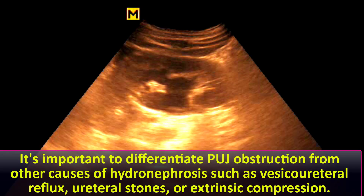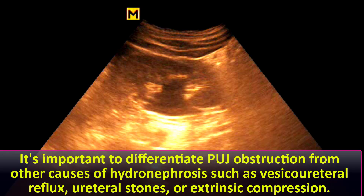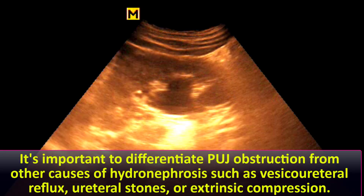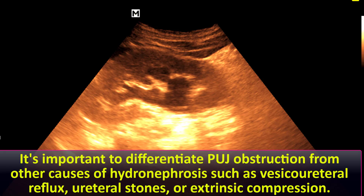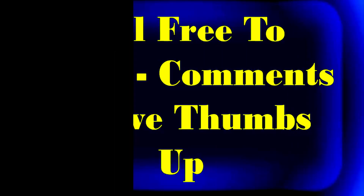It's important to differentiate PUJ obstruction from other causes of hydronephrosis, such as vesicoureteral reflux, ureteral stones, or extrinsic compression.